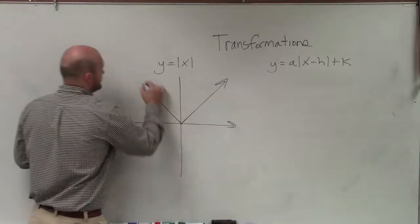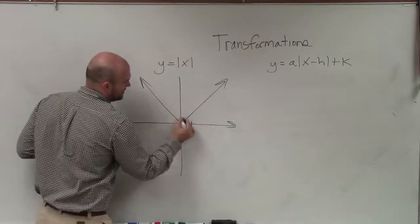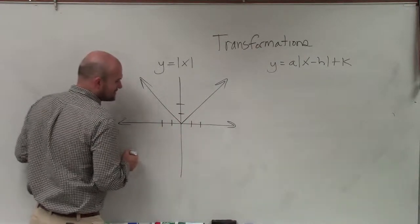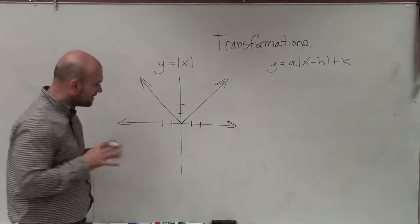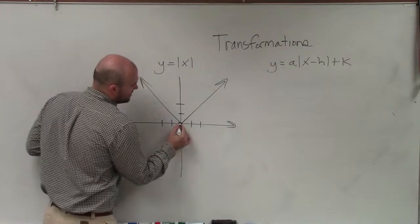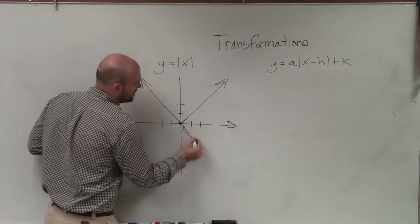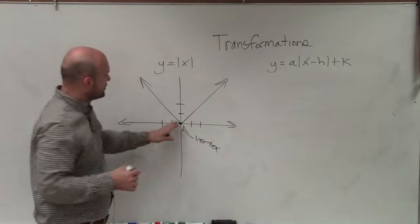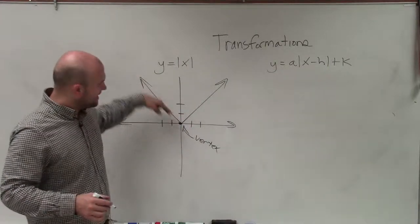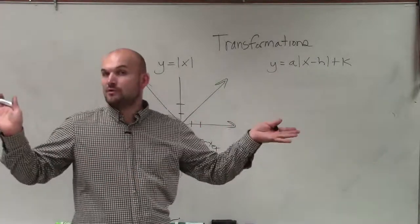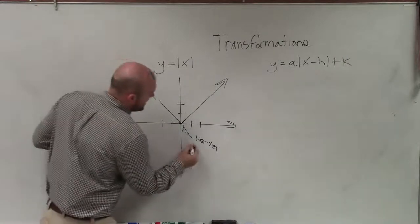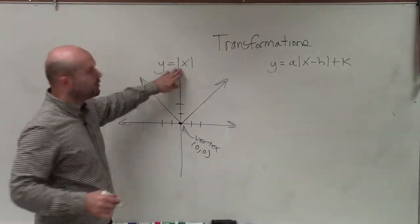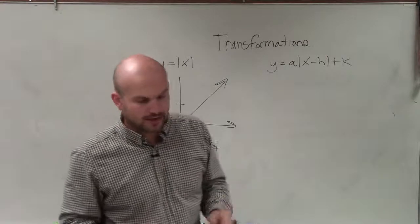The reason why we call it the v-graph is because it is a nice big V. There are a couple of important things we need to understand about the absolute value graph. First of all, here is what we call our vertex. The vertex is just where our two arms of the graph meet together and then go off in their own separate ways. The vertex coordinate point is (0, 0) when we have no transformations.